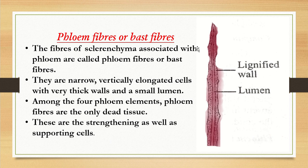Phloem fibers are bast fibers. The fiber structure contains a lignified wall and lumen. Fibers of sclerenchyma associated with phloem are called phloem fibers or bast fibers. As mentioned in the sclerenchyma video, sclerenchyma cells are dead cells, and so phloem fibers are also dead cells. Among the four components of phloem, phloem fiber is the dead cell — narrow, vertically elongated cells with very thick walls and a small lumen. Phloem fibers do not support food conduction; they only provide mechanical strength to the plant.